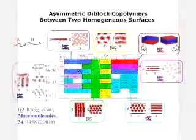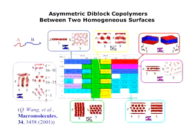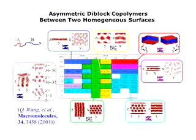But things become much more complex when the copolymers are confined in thin films of tens to hundreds of nanometers in thickness. Each color in this phase diagram corresponds to a different structure.